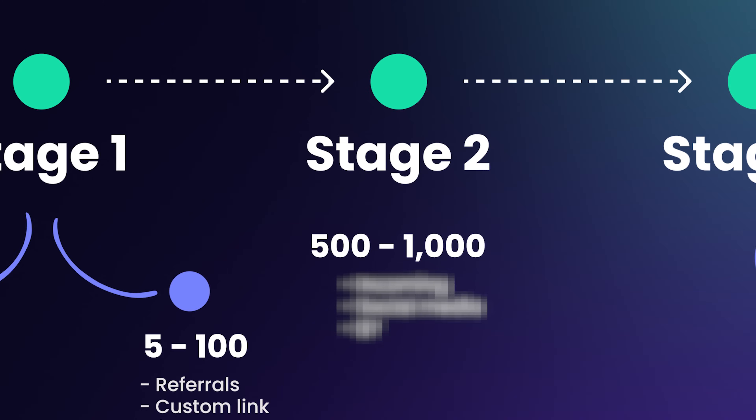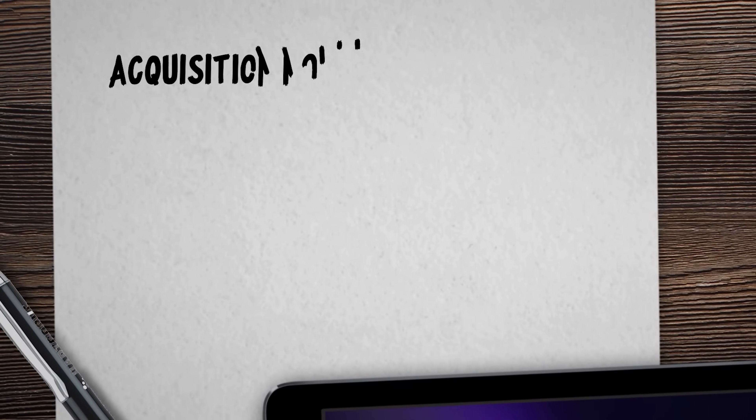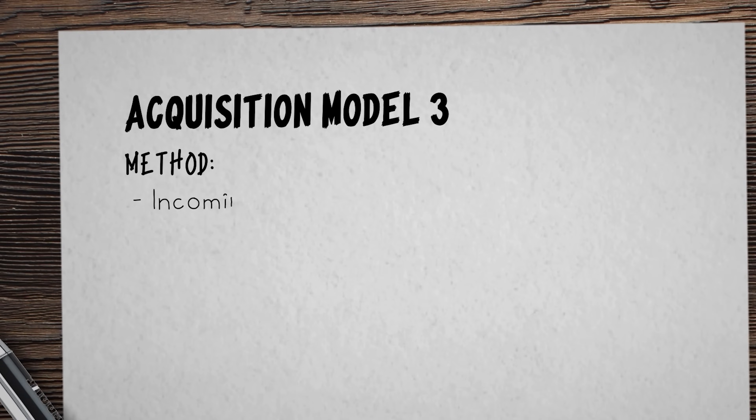We're now entering stage two of the roadmap. At this stage we want to acquire 500 to 1,000 new users. None of our current acquisition models will work at this scale — it would be very hard to do zero-cost cold emails and DMs to realistically get 500 to 1,000 users on board, and we can't keep incentivizing referrals at that scale either. We need a completely new model. For the method, we're going to use incoming — having users reach out to us or sign up themselves by visiting our website. To make this work at scale, we need to create awareness. The best way to do that is by creating content and building in public.